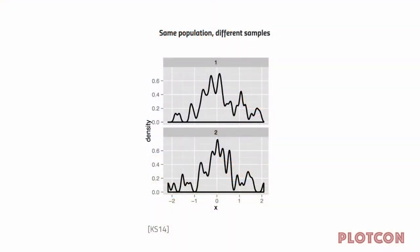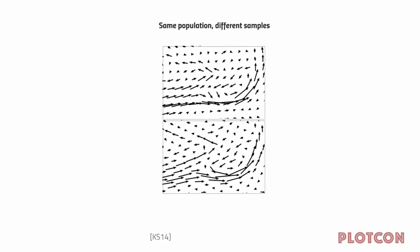Here we have the same population with two different samples taken. You cannot look at this line chart and guess — even if you squinted really hard — that both graphs come from the same underlying population. Again, we have hallucination.